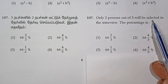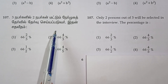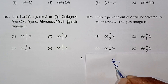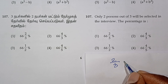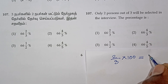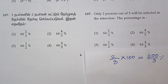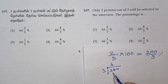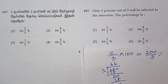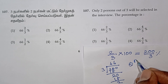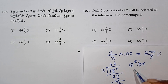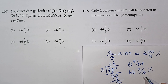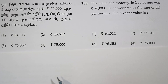Only two out of three will be selected. That is, two numbers out of three. The percentage is 2 into 100 divided by 3, which is 200 by 3. Dividing: 3 into 6 is 2, remainder 2. Using the mixed fraction rule: quotient 66, remainder 2, divisor 3, giving 66 and 2/3 percent. Correct answer is option 1.